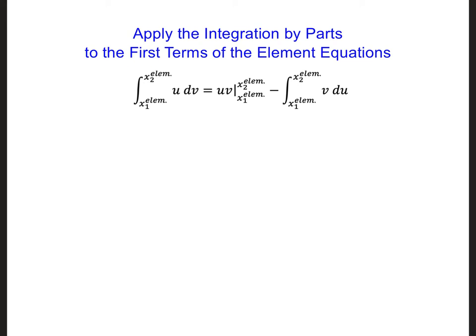Using the integration by parts, we can rewrite an integral of the form u dv as the summation of two terms, uv minus v du. So let's just consider the first term of the first equation on the previous slide, so the first element equation.